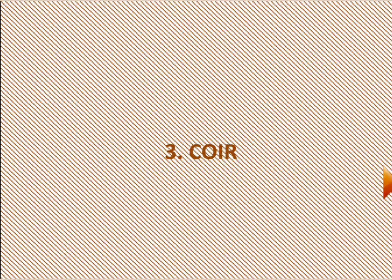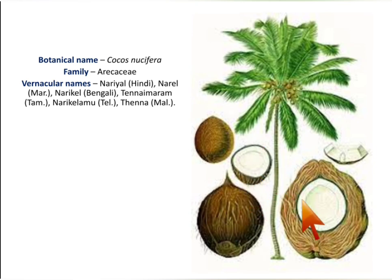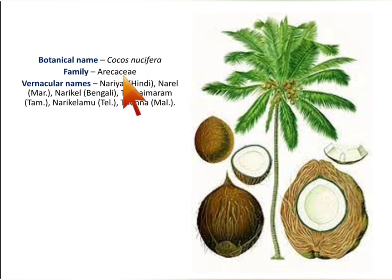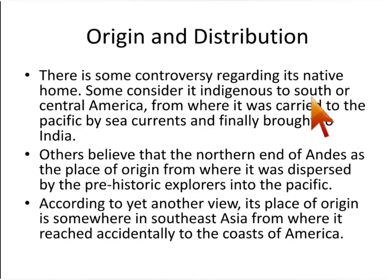The coconut plant — the thread-like structures covering the outside of the shell — that is the coir. The botanical name of the coconut plant is Cocos nucifera, belonging to the family Arecaceae. In Hindi it is known as nariel, in Marathi narel, in Bengali narikel, in Tamil Nadu thenaimaram, in Telugu narikellamu, and in Malayalam thena.